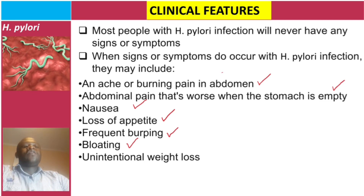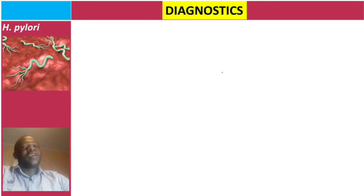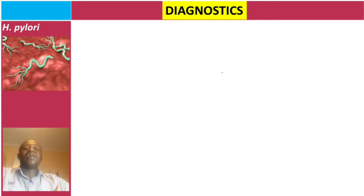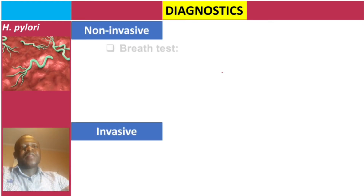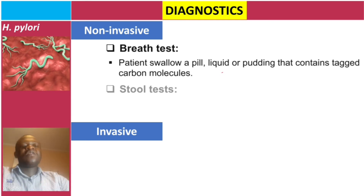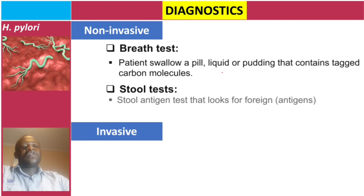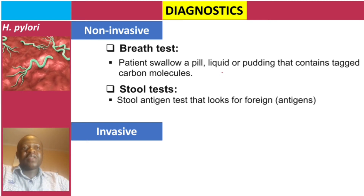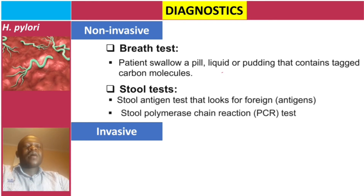For diagnosis of H. pylori, there are two groups of methods: non-invasive and invasive. Non-invasive methods include the urea breath test, where the patient swallows a pill, liquid, or pudding containing tagged carbon molecules. Another non-invasive test is the stool antigen test, which looks for H. pylori antigens as foreign proteins. Stool PCR is also a non-invasive option.